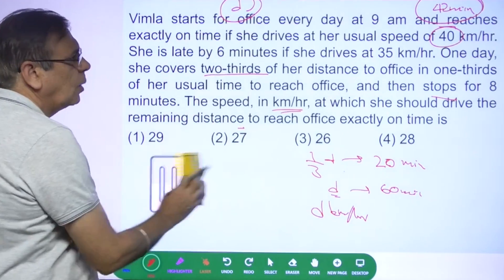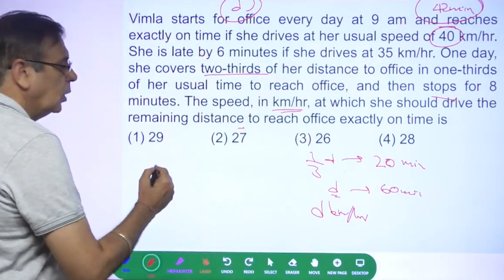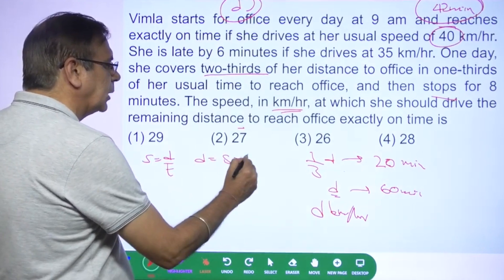I'm sure we can find that distance. Why? Because we know at 40 kilometers per hour she is taking 42 minutes. So speed is equal to distance upon time, or distance is equal to speed into time.